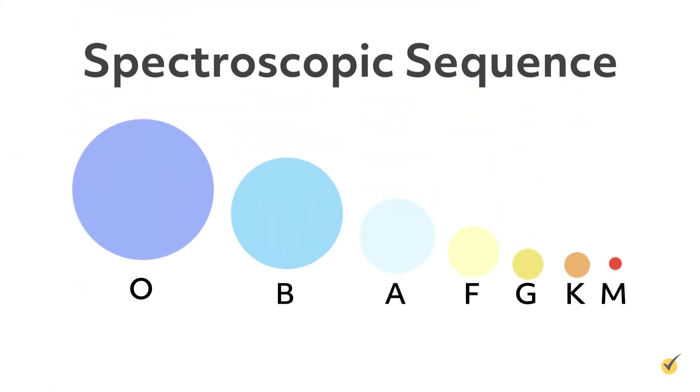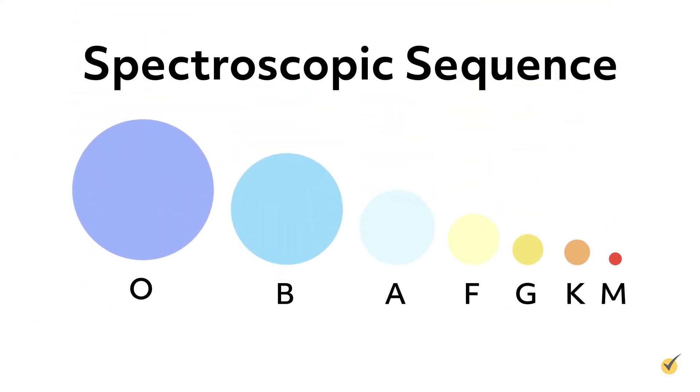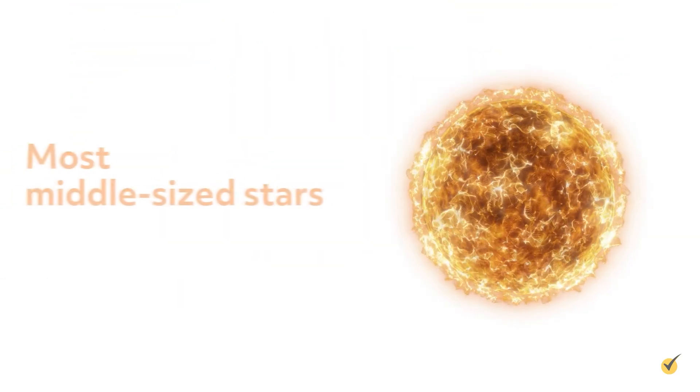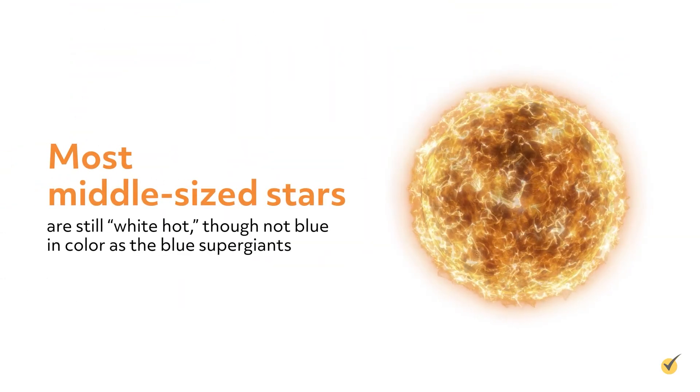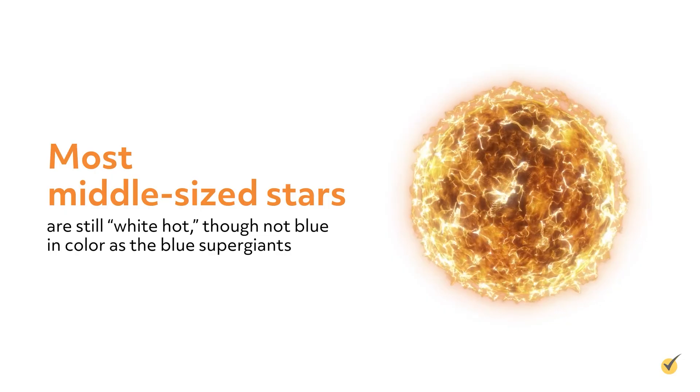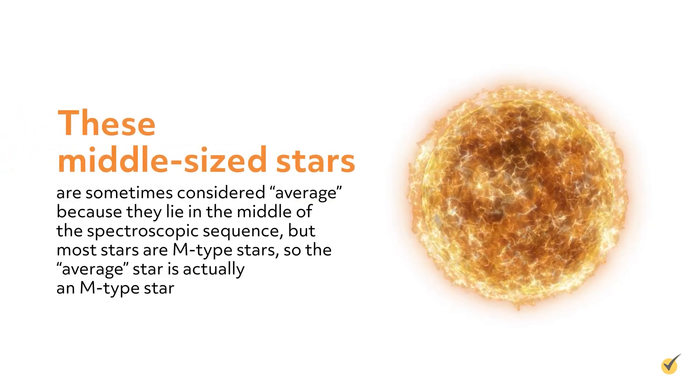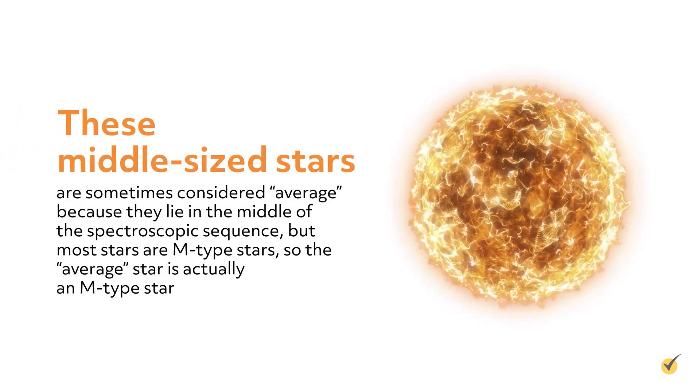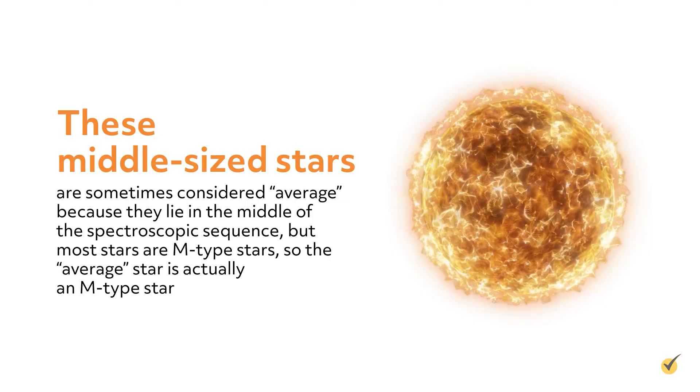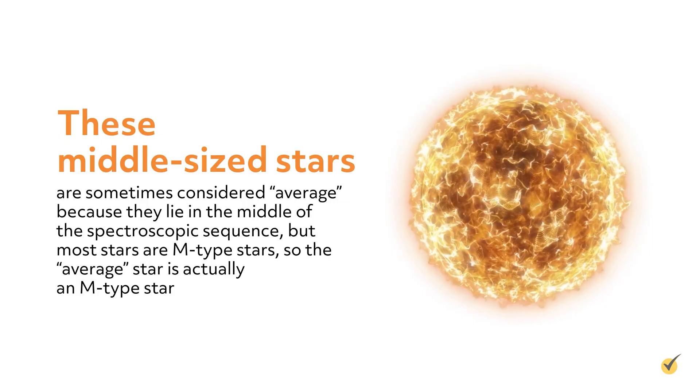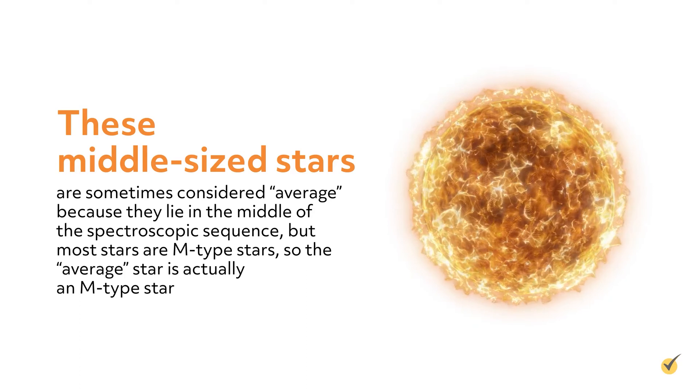In the middle of the spectroscopic sequence, you have temperatures and lifetimes of middle-sized stars. Now, most middle-sized stars are still white-hot, though not blue in color as the blue supergiants. These middle-sized stars are sometimes considered average because they lie in the middle of the spectroscopic sequence, but most stars are M-type stars, so the average star is actually an M-type star.